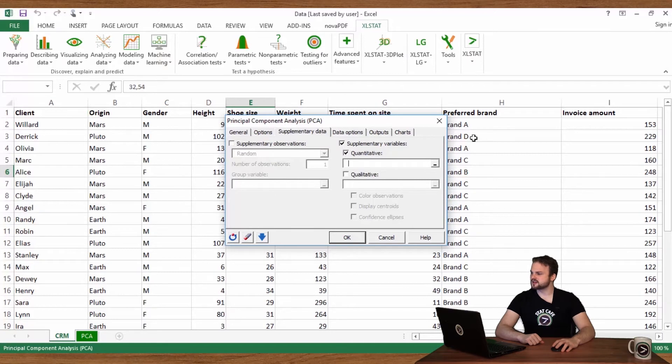Go to the supplementary data tab and activate supplementary variables option. In the quantitative field, select the invoice amount column. And in the qualitative field, select the origin column. Activate color observations and display centroids options. Then click OK.